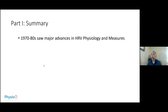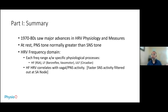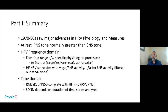The summary of part one: the 1970s–80s saw major advances in HRV physiology measures. At rest, parasympathetic nervous tone is normally greater than sympathetic tone. Each frequency range in the frequency domain is associated with a specific physiologic process. High-frequency HRV correlates with the vagal parasympathetic nervous system. In the time domain, RMSSD and PNN50 correlate with high-frequency HRV, while the standard deviation of NN intervals depends on the duration of the time series analyzed.